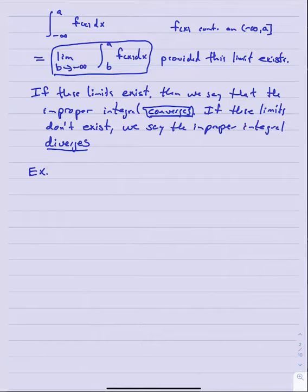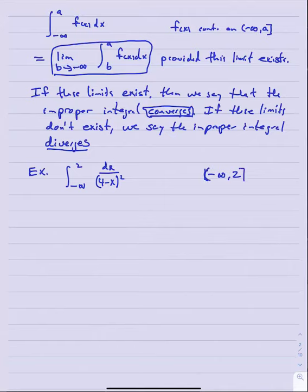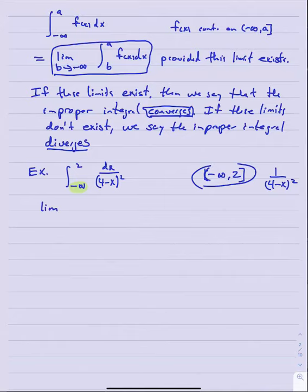Let's look at a couple of simple examples. First, consider the integral from -∞ to 2 of 1/(4 - x²) dx. The interval of integration is -∞ to 2, and the function 1/(4 - x²) is continuous on that interval. I'll evaluate this improper integral by replacing the -∞ with a variable and taking the limit as b approaches negative infinity. Make sure that if the limit is at negative infinity, you're taking the limit as b approaches negative infinity.